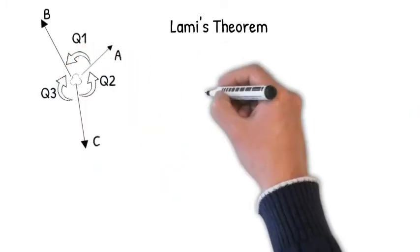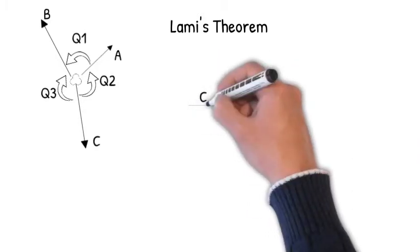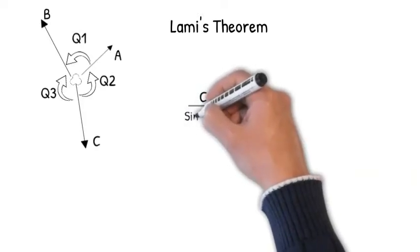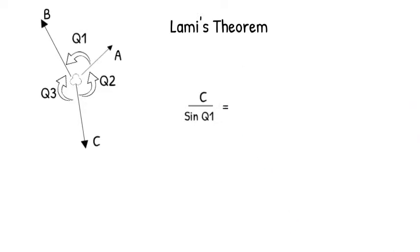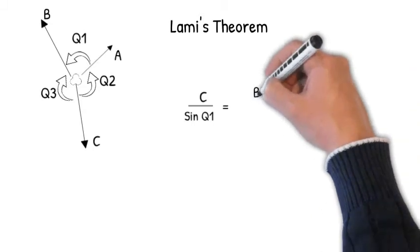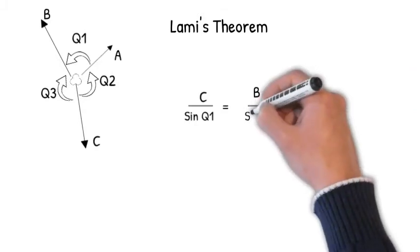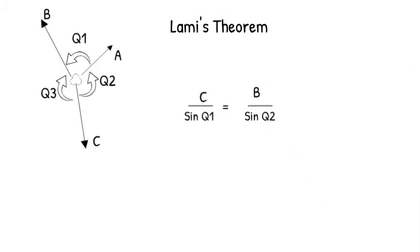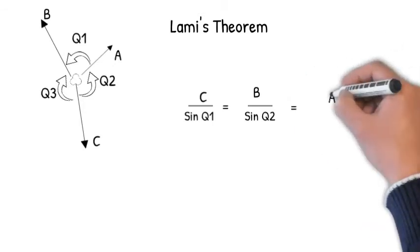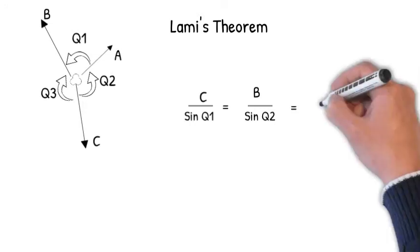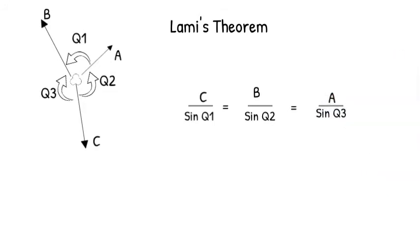an equation dealing with three forces and the angles made by them. According to the theorem, force C divided by sine of theta one (the angle opposite to C) equals force B divided by sine of theta two (the angle opposite to B), which equals force A divided by sine of theta three (the angle opposite to A).